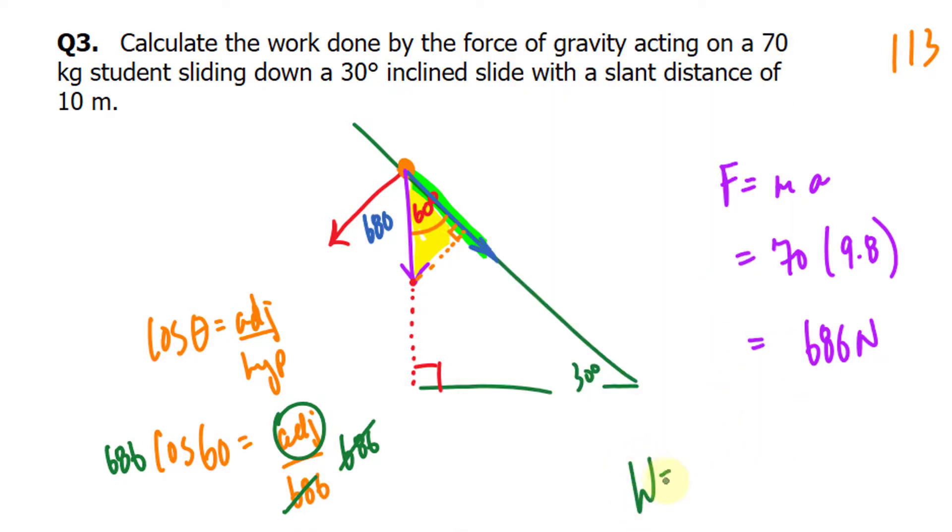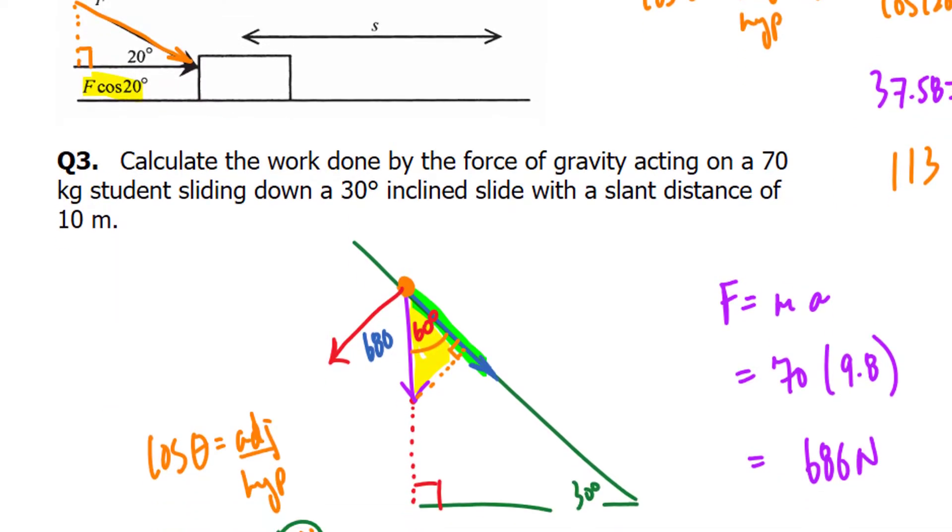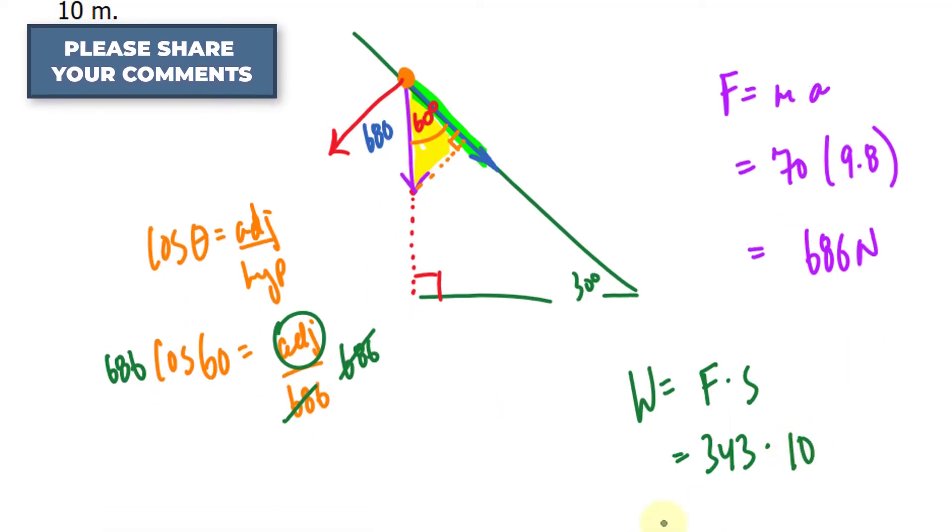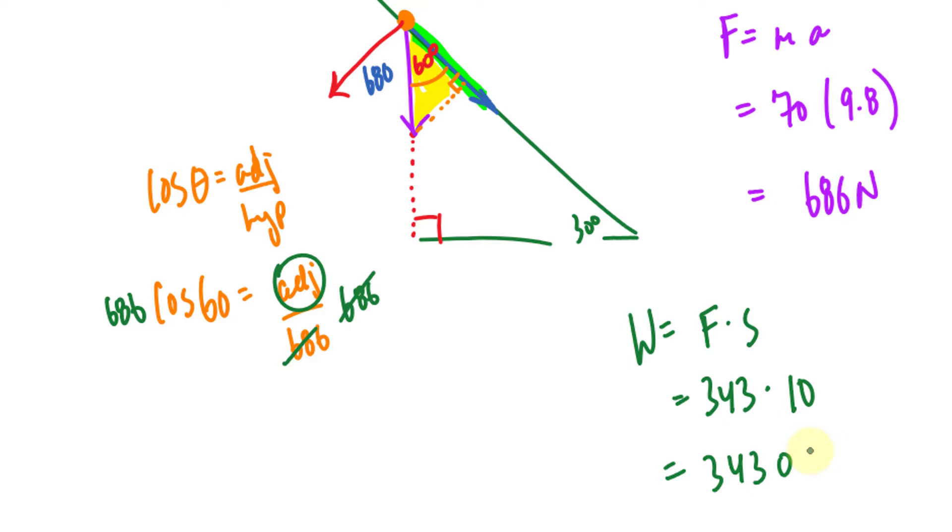Remember work is defined as force times displacement. The force along this plane is 343. Multiply it by 10 meters, which is the distance that this person travels. We get 3430 joules. So that concludes the first part of the series on how to calculate work.